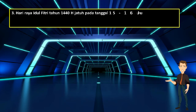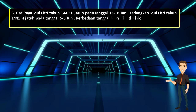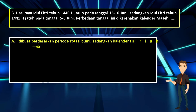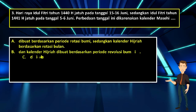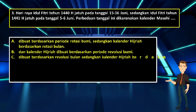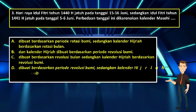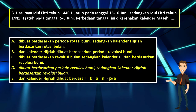Soal nomor 3. Hari Raya Idul Fitri tahun 1440 Hijriah jatuh pada tanggal 15-16 Juni, sedangkan Idul Fitri tahun 1441 Hijriah jatuh pada tanggal 5-6 Juni. Perbedaan tanggal ini dikarenakan: A. Kalender Masehi dibuat berdasarkan periode rotasi bumi, sedangkan Kalender Hijriah berdasarkan rotasi bulan; B. Kalender Hijriah dibuat berdasarkan periode revolusi bumi; C. Dibuat berdasarkan periode revolusi bulan, sedangkan Kalender Hijriah berdasarkan revolusi bumi; D. Dibuat berdasarkan periode revolusi bumi, sedangkan Kalender Hijriah berdasarkan revolusi bulan.